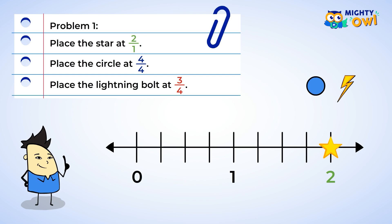Next, we need to place the circle at four-fourths, or four over four. When the numerator and the denominator are the same number, that means you have all the parts of a whole. And that is one.